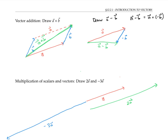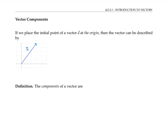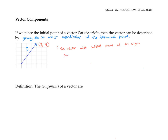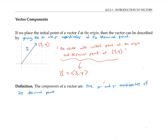In the next part of the video, I'll be using coordinate grids for the vectors. If we place the initial point of a vector a at the origin, then the vector can be completely described by giving the x and y coordinates of the terminal point. For example, this vector has a terminal point at x equals three and y equals four. A shortcut is to say the vector has components three, four, written with angle bracket notation. So the components of a vector are just the x and y coordinates of its terminal point when the vector's initial point is at the origin.